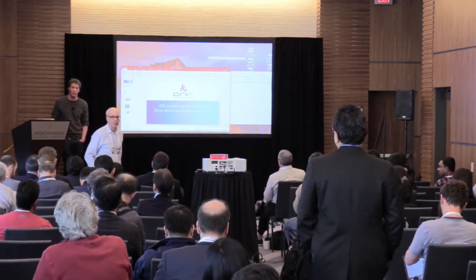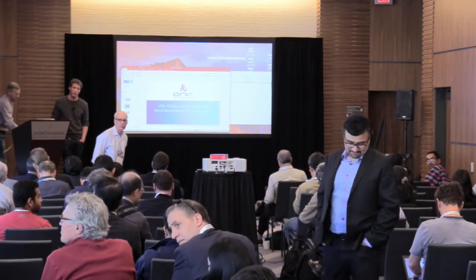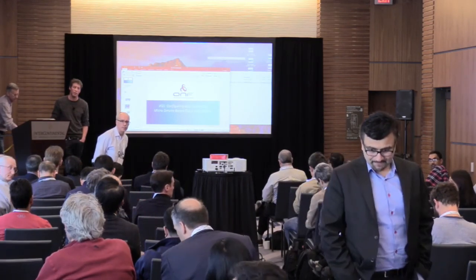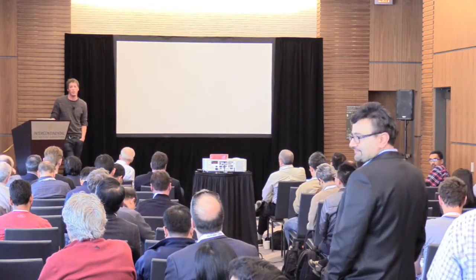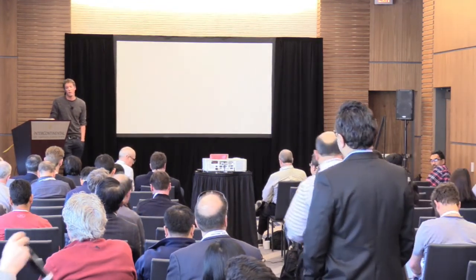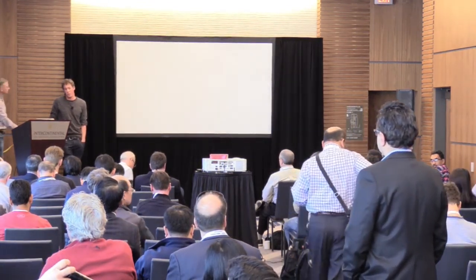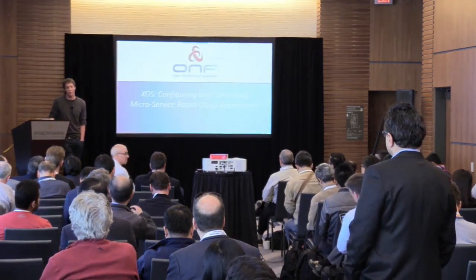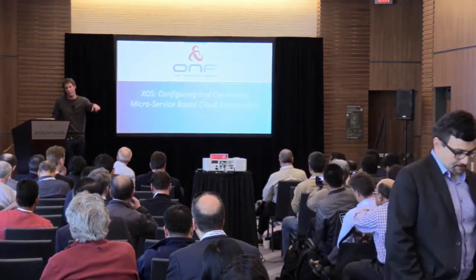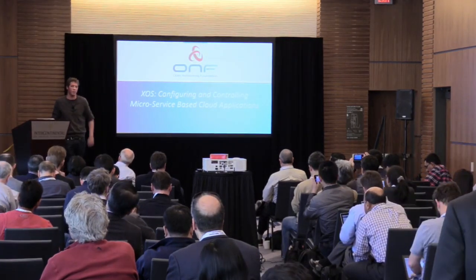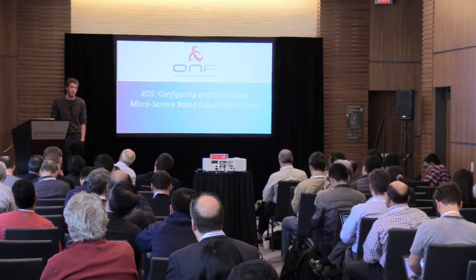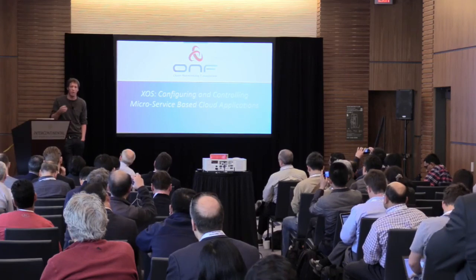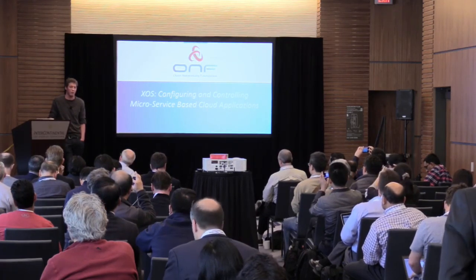Question: What if the ONU was extended to something else — for example, some other access technology — and was not the terminating point? Can VOLTHA discover that as well? That depends on the technology. For example, in a G.fast network with fiber to the curb or fiber to the distribution point and then G.fast past that, you can also use OMCI to control the DPU. Once you have the particular support in VOLTHA, you'll be able to support that and automatically detect new subscribers on that line.